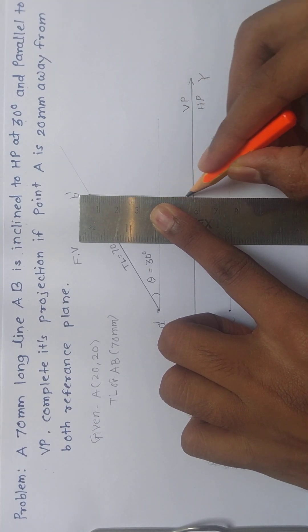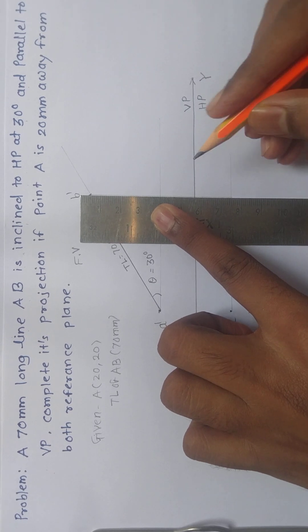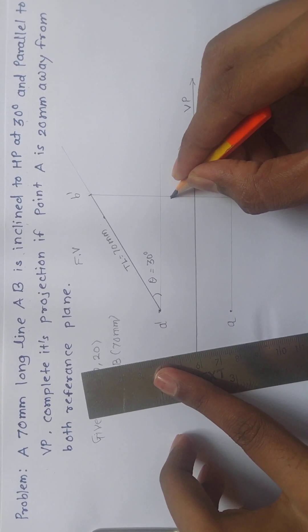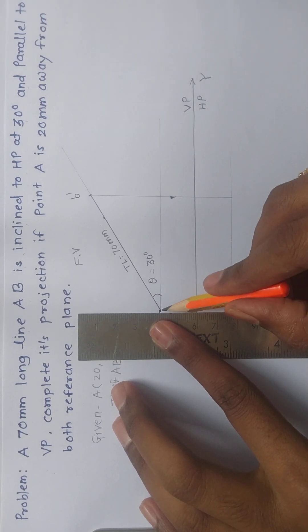Now I will take the projection from the front view to the top view. I will show one arrow here, and here also I will show one arrow here.